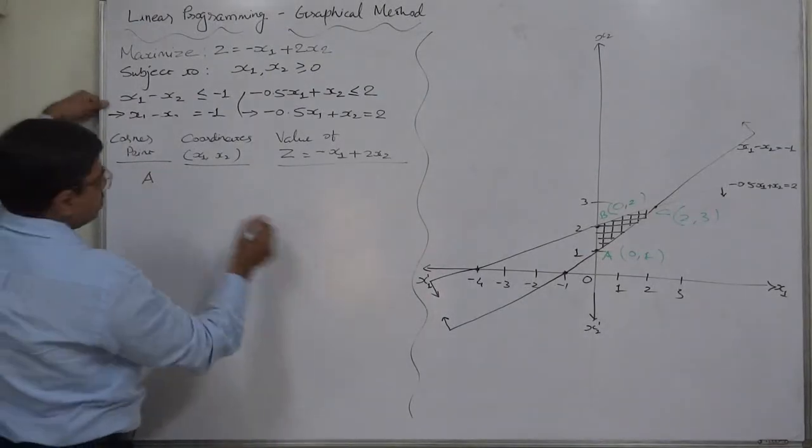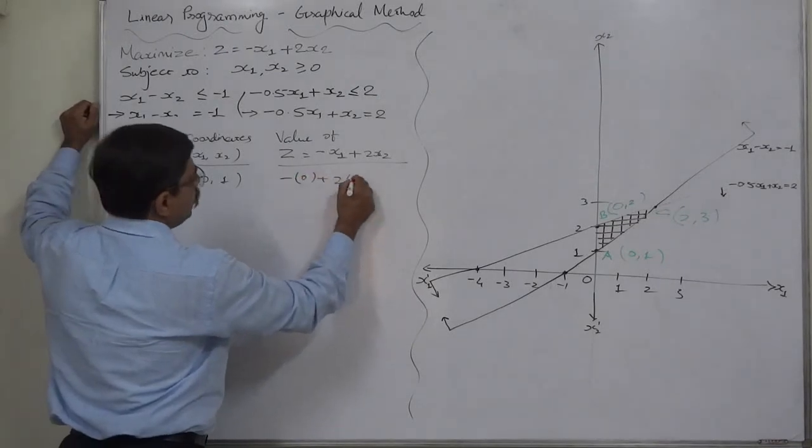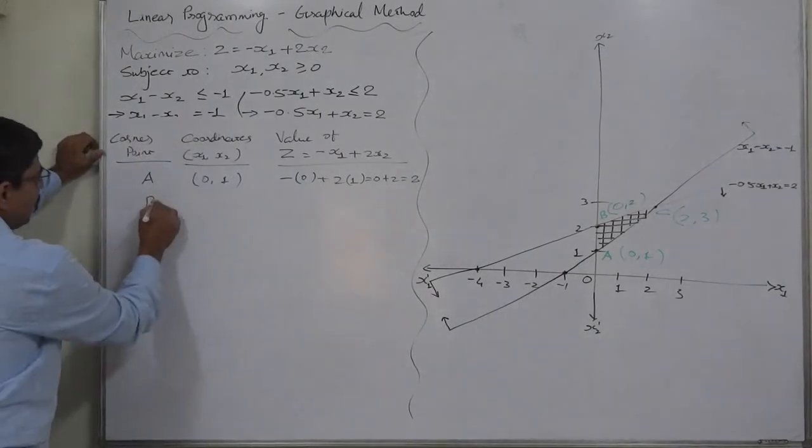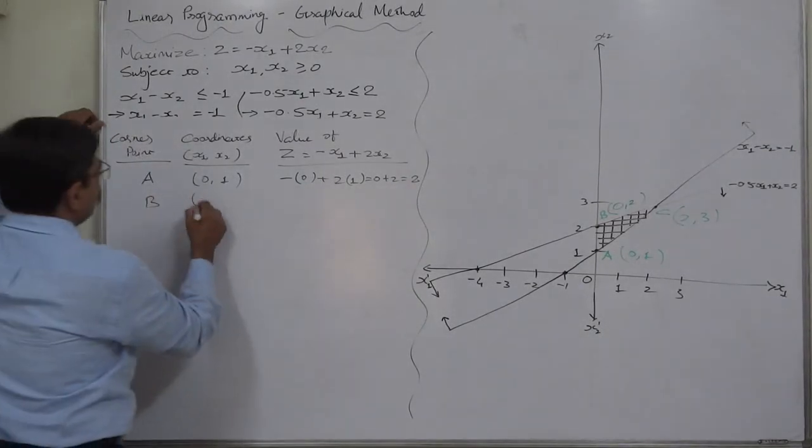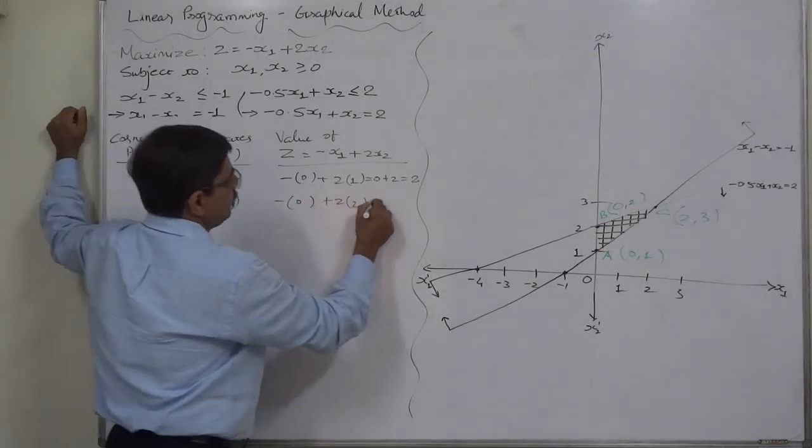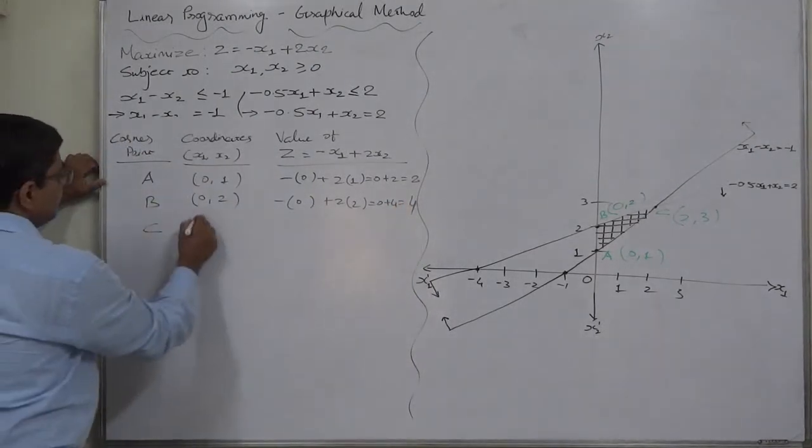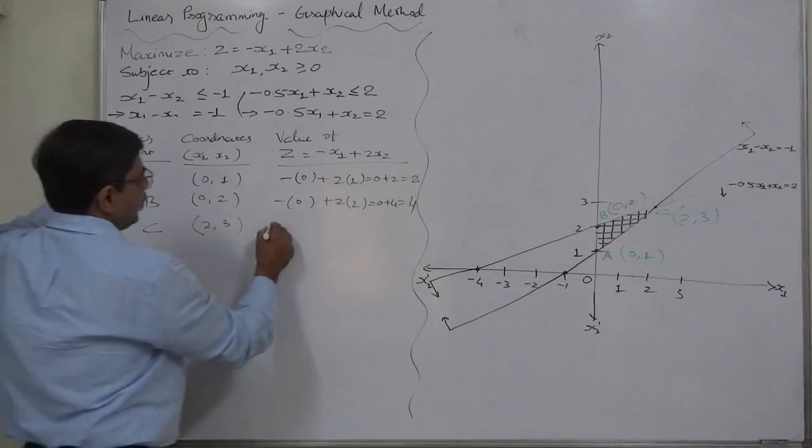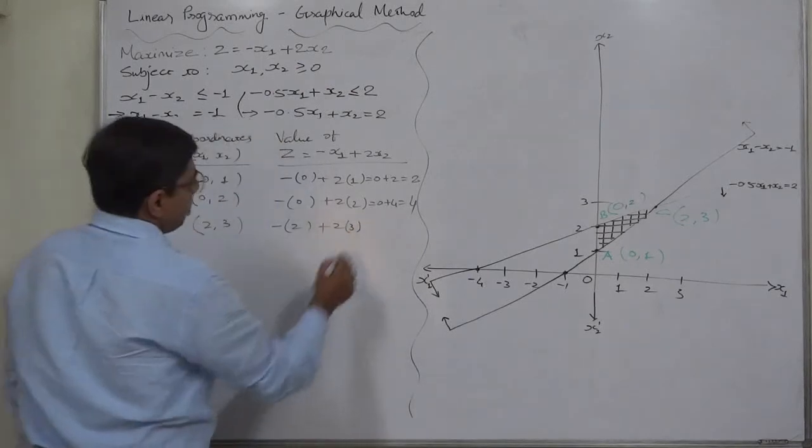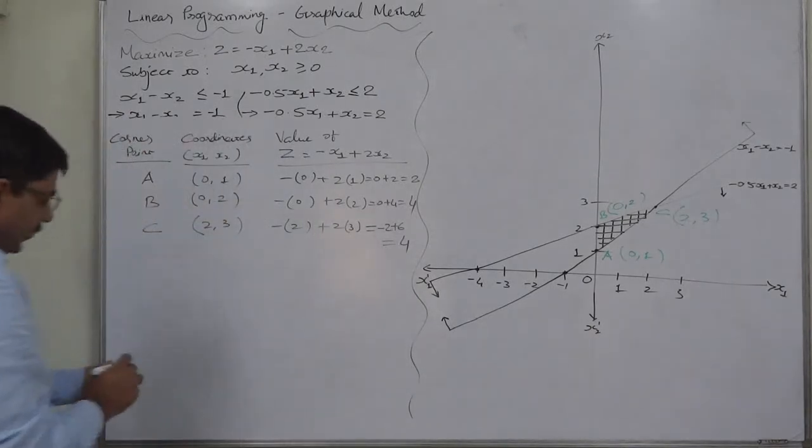Corner point A has 0 and 1 coordinate. Minus into 0 plus 2 into 1, that's 0 plus 2 equals to 2. Corner point B has 0 and 2. Minus into 0 plus 2 into 2, that will be 0 plus 4 equals to 4. And C, 2 and 3. Minus into 2 plus 2 into 3, so it is minus 2 plus 6, that is also 4.